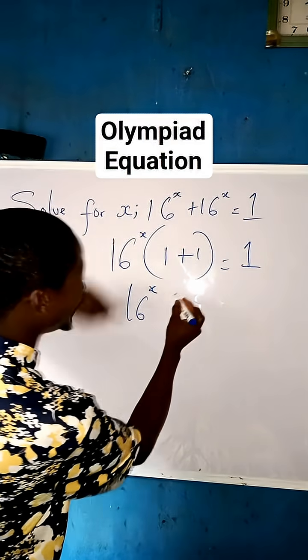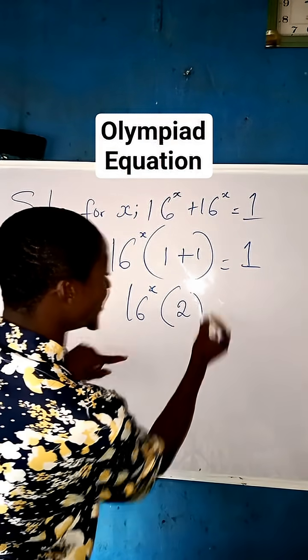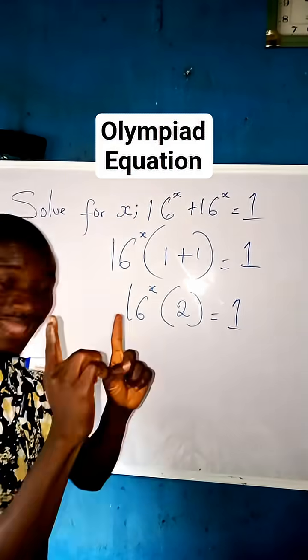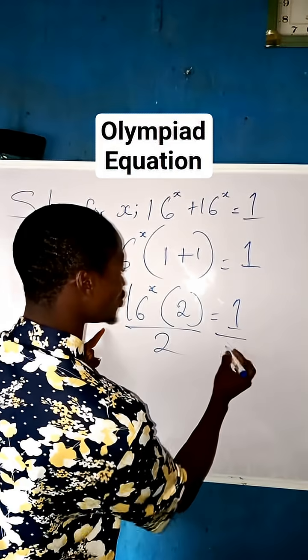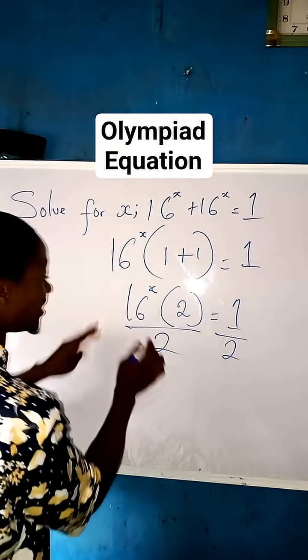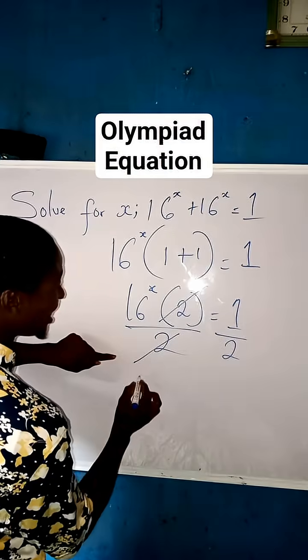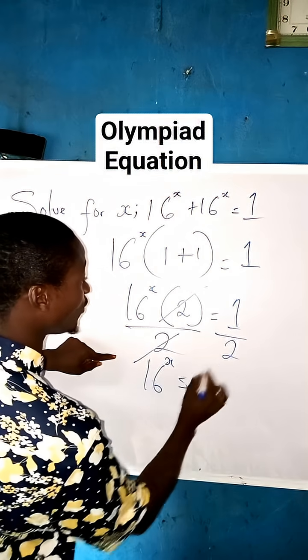Now we will sum up these two we have here. We are now going to have 16^x, then 1 + 1 here is 2, then equal to 1. Now what do we do? Divide both sides by 2 so that we can concentrate on this.